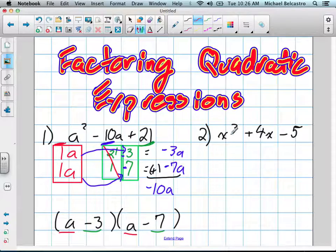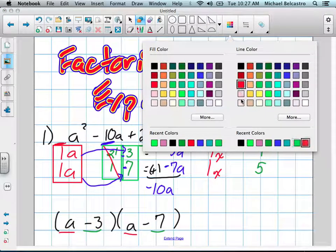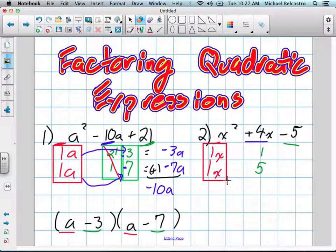Now, this question here, same idea. A, C, B. Factors of A are 1x and 1x. What are factors of 5? 1 and 5. Pretty simple for that. We're obviously going to be working with those two columns.